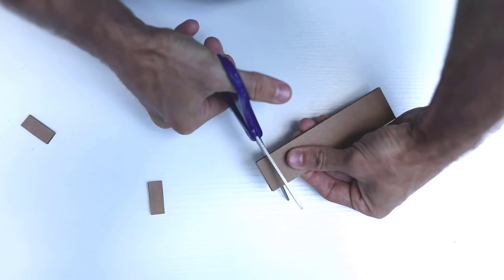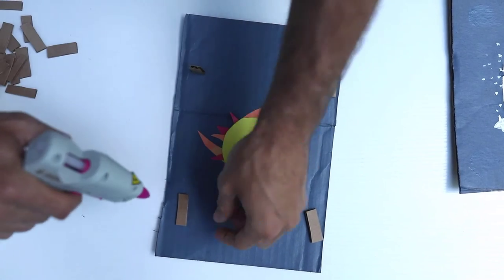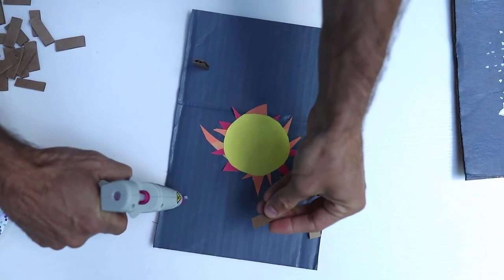Start cutting out cardboard strips that will reinforce each layer to each other. Hot glue them and stack them.